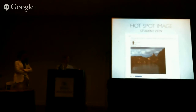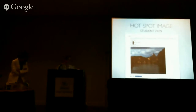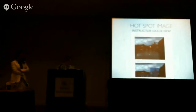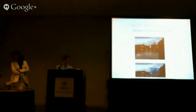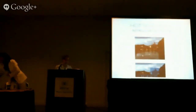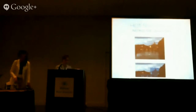What students see for hotspot: the question opens, they have instructions above, and two items to identify. They select those items and submit to the instructor. This is what the instructor sees — little bullseyes numbered according to the items. In this case, the student did not correctly identify the bridge, so it tells you they didn't get it right, shows what the student submitted, and also shows the instructor what the original zones were.